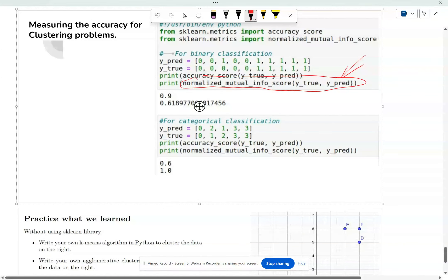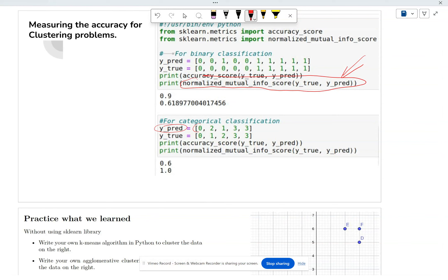Well, when you do clustering, here's the predicted, you could get 0, 2, 1, 3, 3. So it's saying that this is a cluster, this is a cluster, this is a cluster, and this is a cluster. Well, what's the difference between calling this cluster 1 or calling this cluster 1? It doesn't really matter.